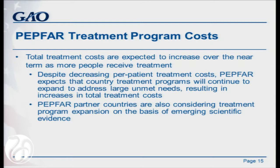Examining our second objective, we looked at how cost information has supported expanding these treatment programs, and found that the cost information has really helped them to expand programs but has some limitations. We found that total treatment costs are expected to increase over the near term as more people receive treatment. The first reason is the need to address large unmet need — higher treatment goals are going to require additional resources, with estimates putting need at 15 million people still.